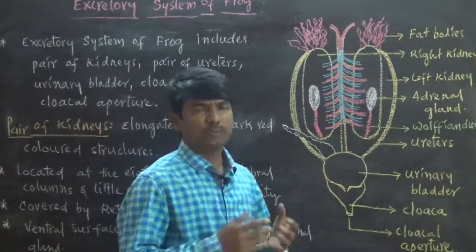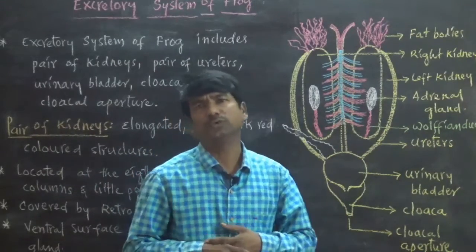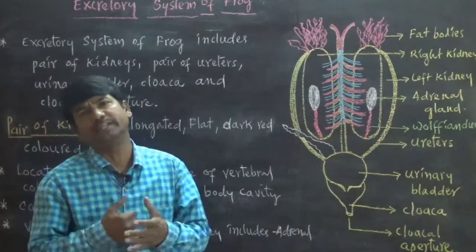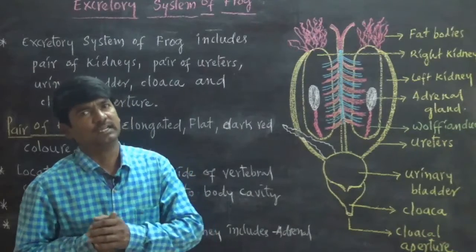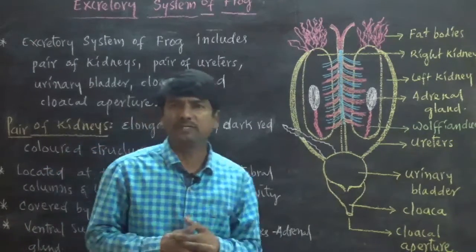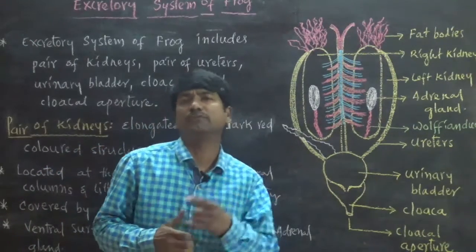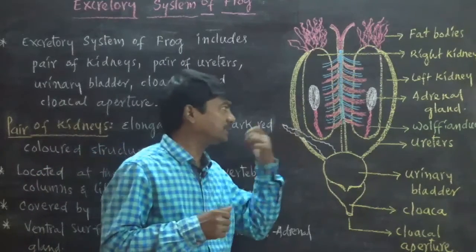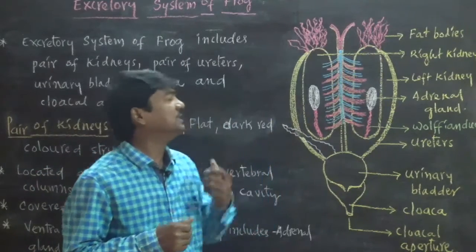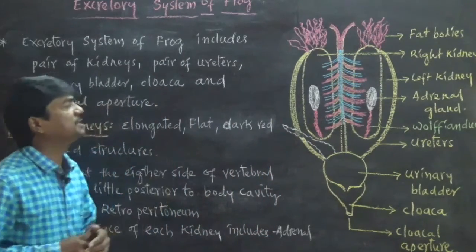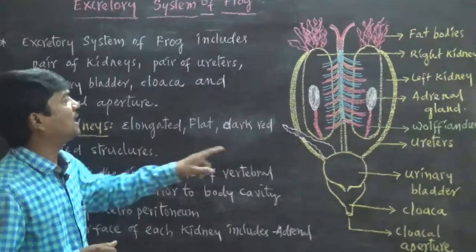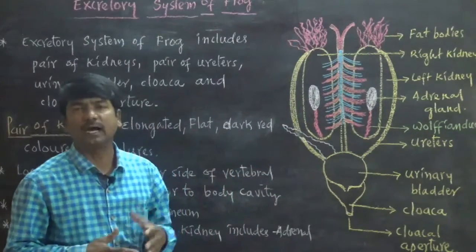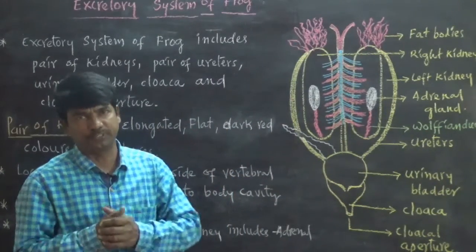One pair of kidneys are located in the posterior part of the body cavity, on either side of the vertebral column. One pair of kidneys can be identified by their characters — they are elongated, flat, dark red colored structures appearing on either side of the vertebral column.